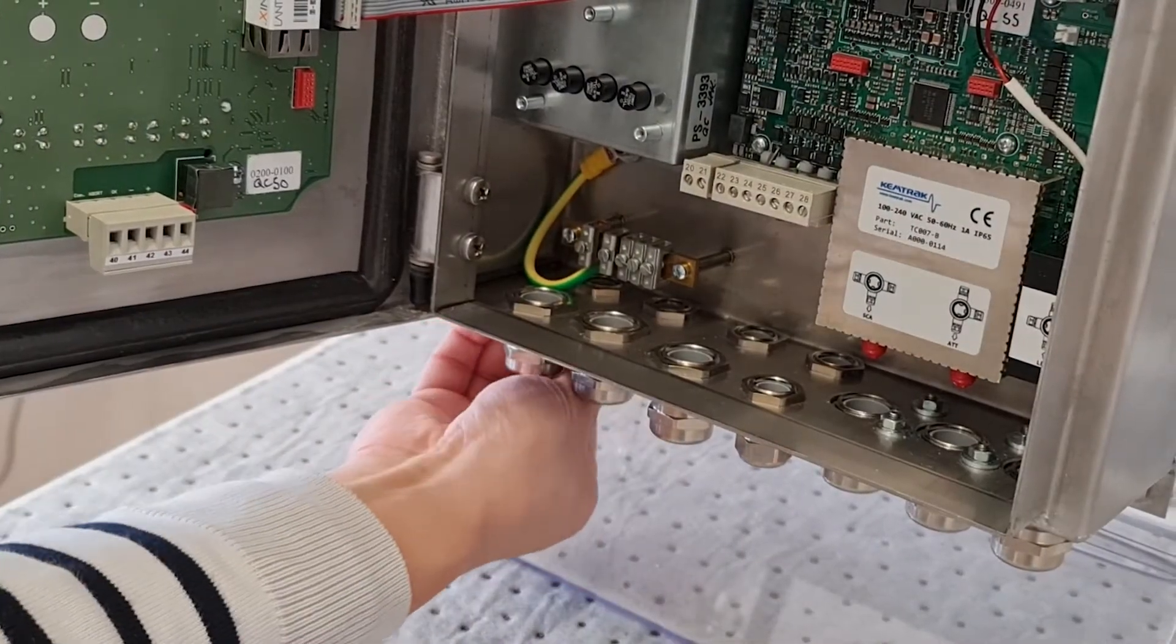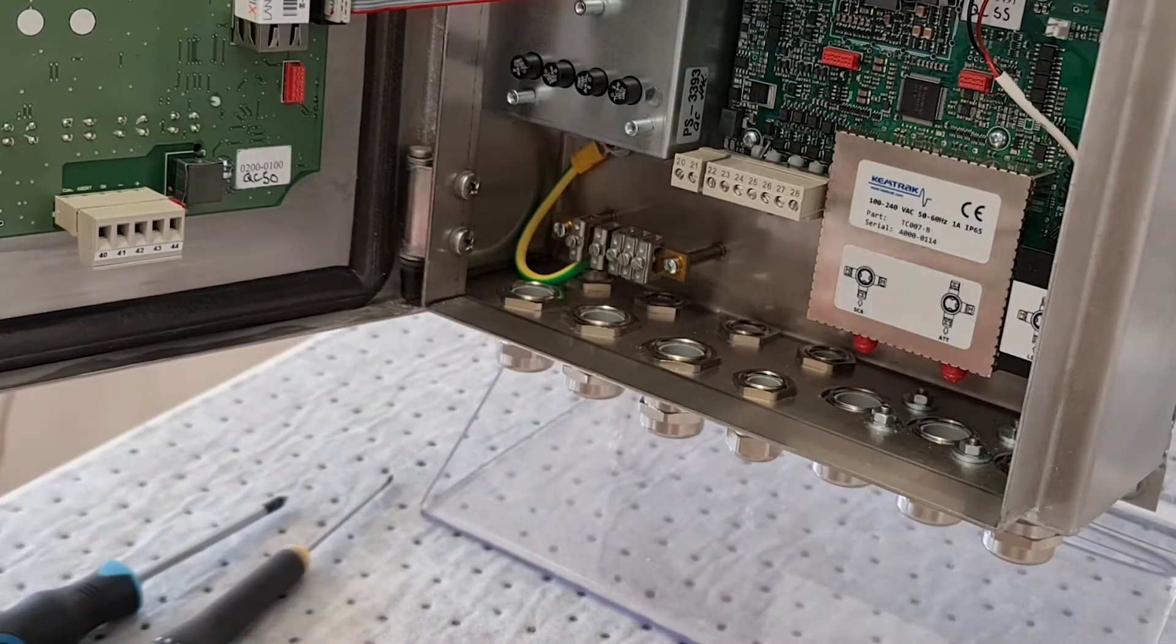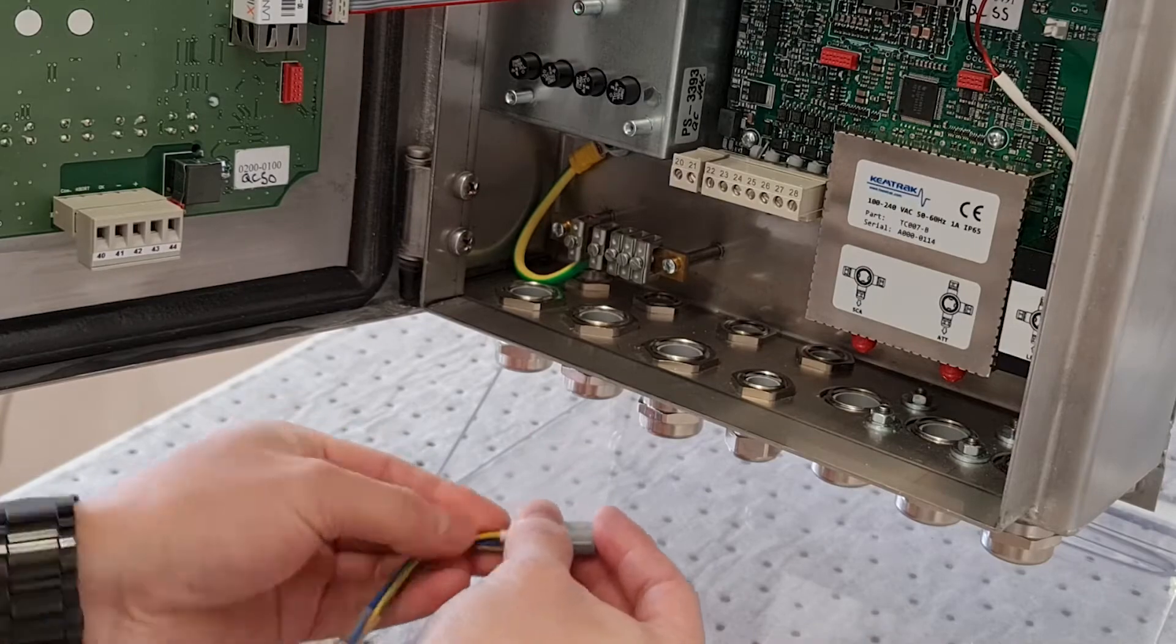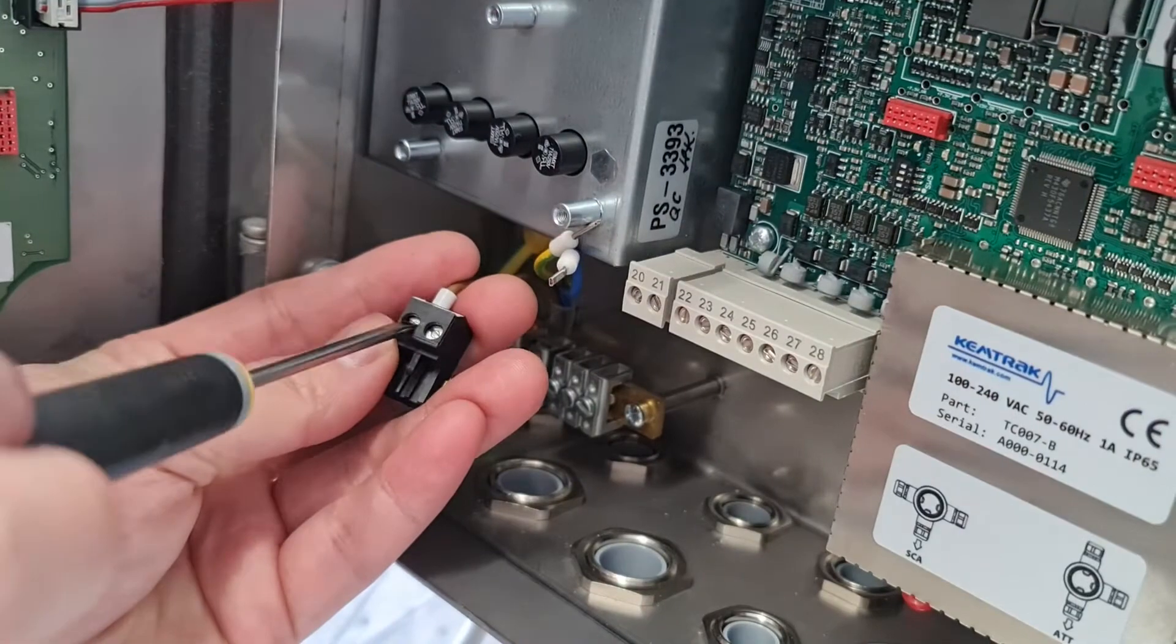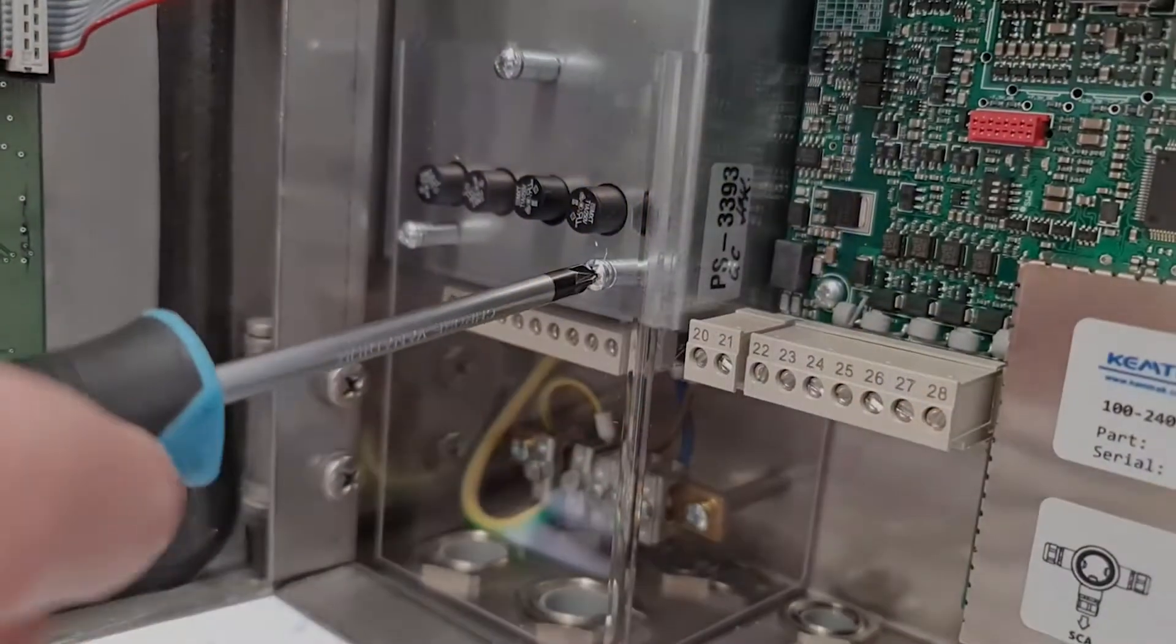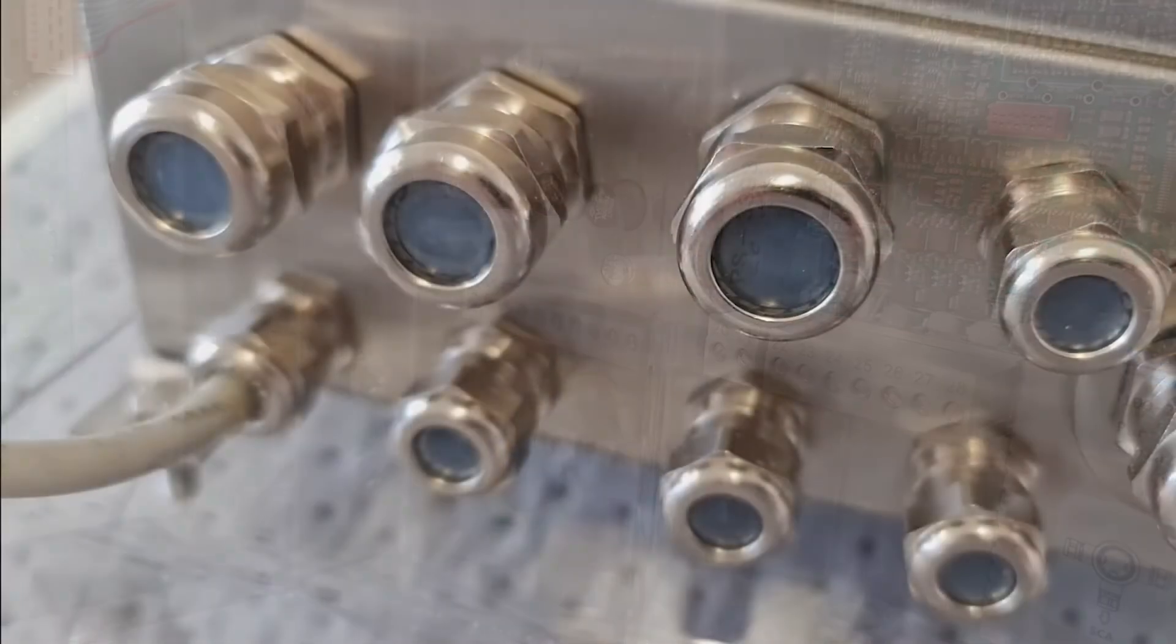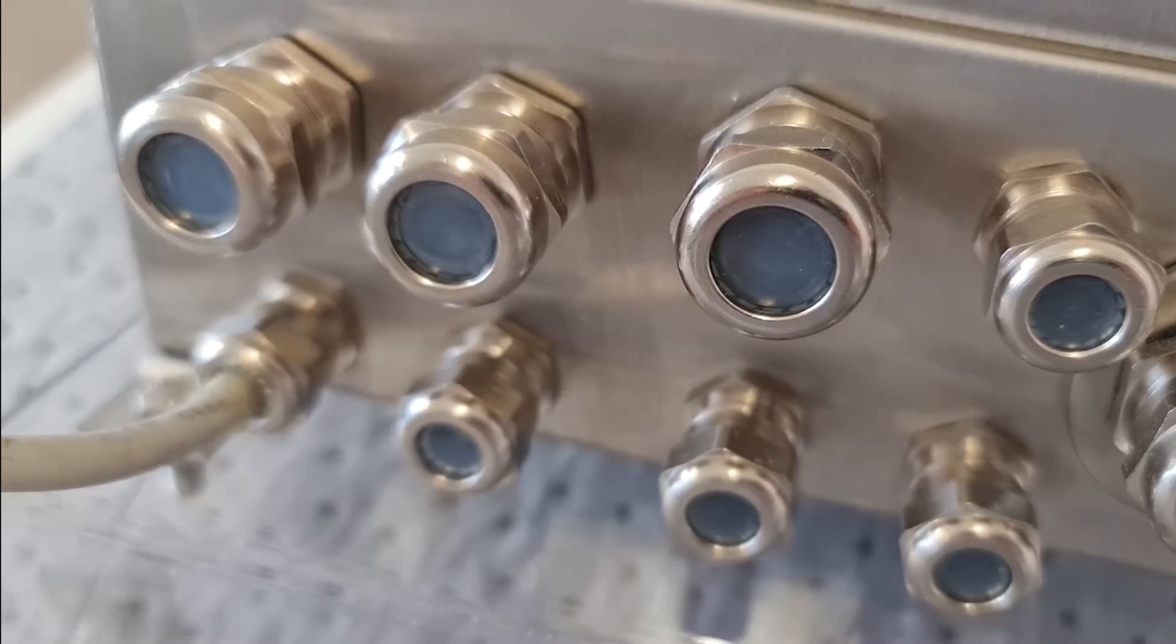Feed the power cable through the cable gland located on the bottom left of the analyzer enclosure. Connect the power cables to the connector and the earth wire to the rail. Replace the protective cover. Firmly fasten the cable gland and check the protective covers are in place on all the unused cable glands.